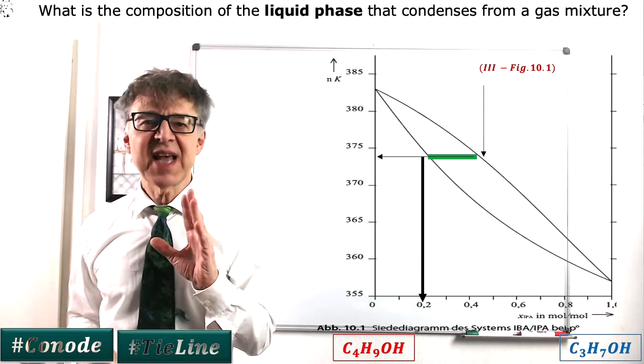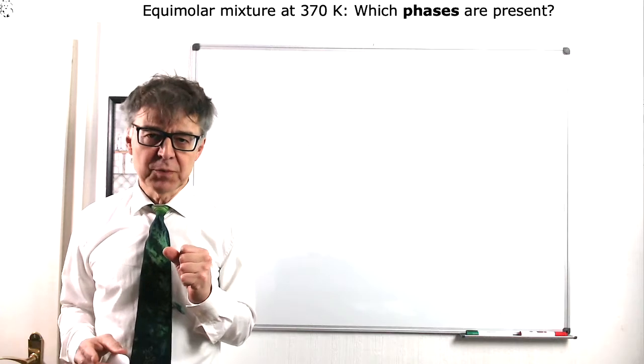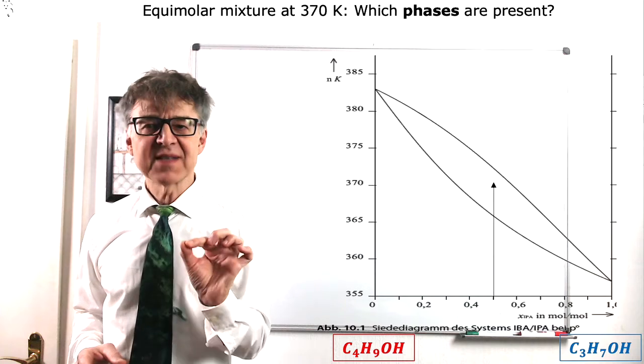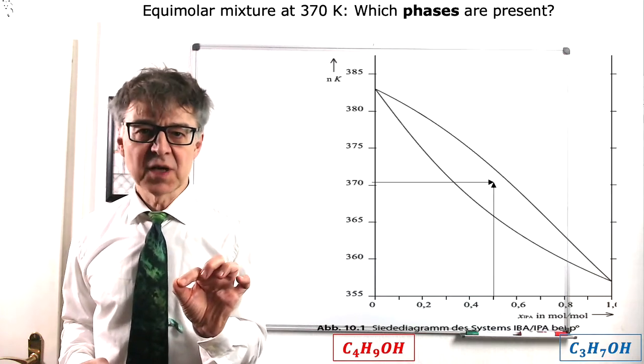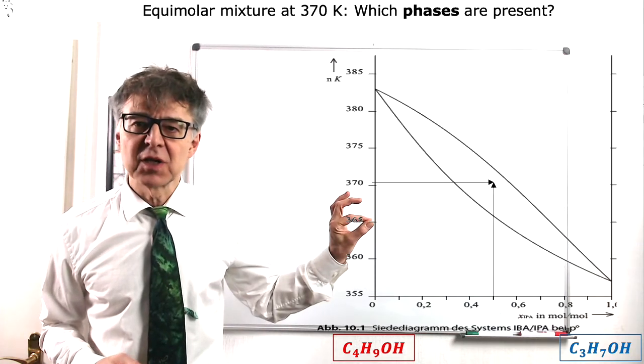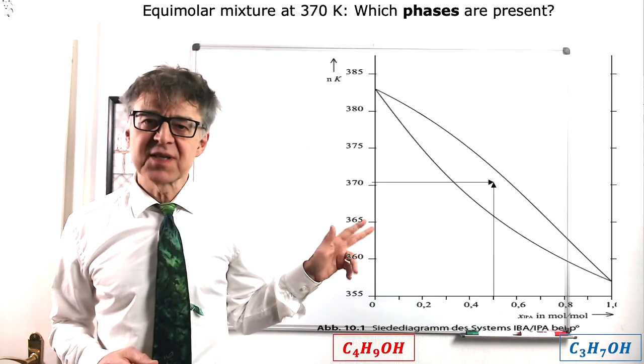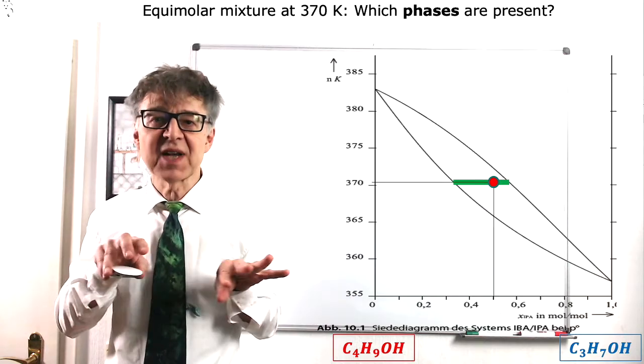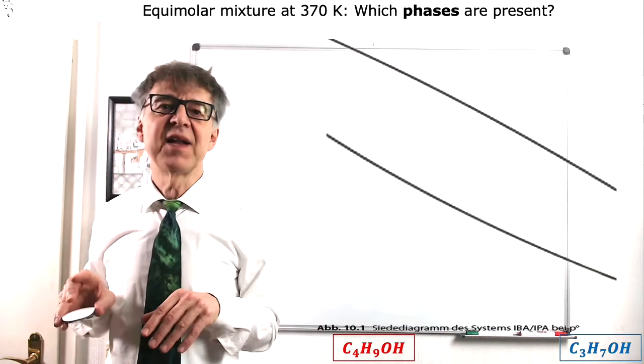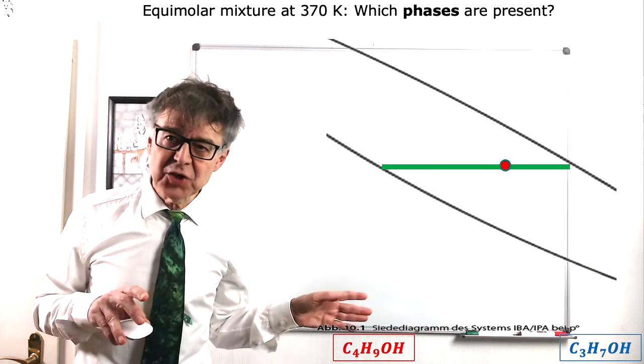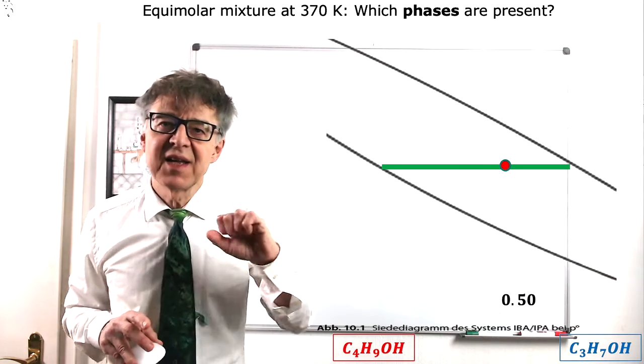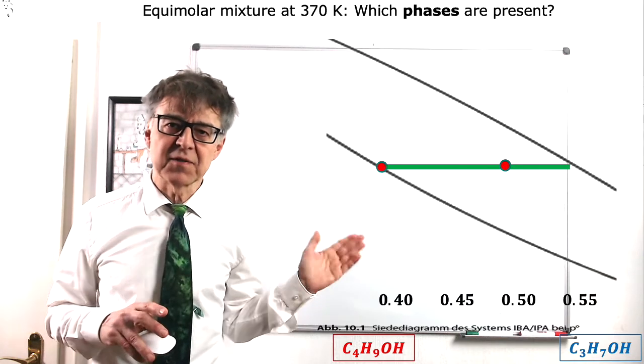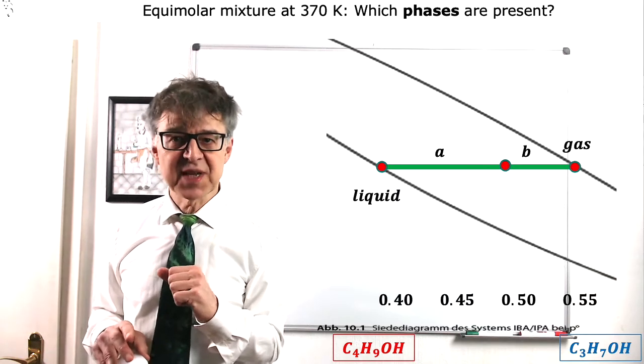With a phase diagram, we can discuss any temperature and composition of the two-component system. For example, if we heat a 50-50 mixture to 370 K, we are in the two-phase region. Which means that this mixture is not stable as a homogeneous phase, but it decomposes along the tie line into a liquid phase and a gaseous phase. The intersection of the tie line with the binodals tells us the composition of these phases. The liquid phase is 40% and the gas phase is 55% in IPA.